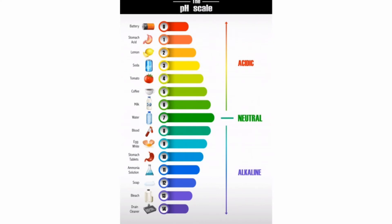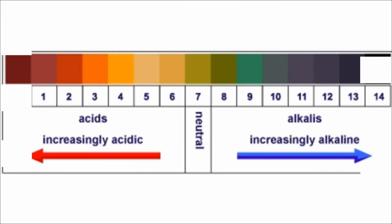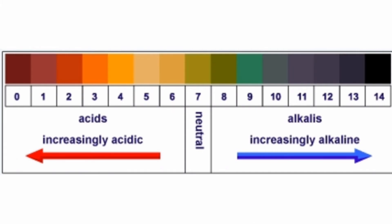So one thing that many people can confuse is that a lower pH number means a stronger acid, and a higher pH number means a stronger base. It can be a little confusing, but the lower the pH of a substance is, the stronger of an acid it is. Sometimes it is more helpful to think that the further away from neutral a substance is, the stronger it is in either the acidic or basic direction.